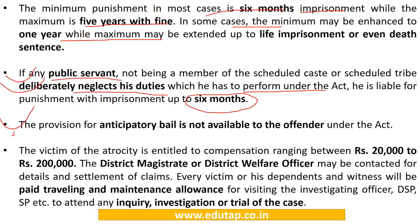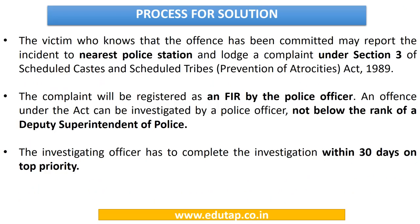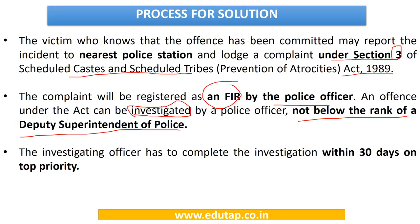Most importantly, there is no provision of anticipatory bail to the offender under the Act, and the victim is entitled to compensation varying from Rs. 20,000 to Rs. 2 lakh. The victim of atrocity can lodge a complaint under Section 3 of the Act, which will be registered as an FIR by the police officer. The offence can be investigated by a police officer not below the rank of DSP, and he has to complete the investigation within 30 days on top priority.